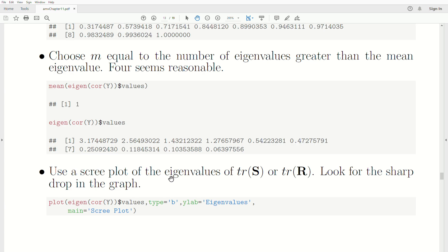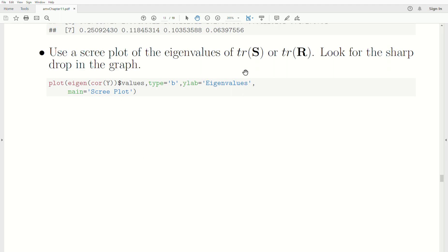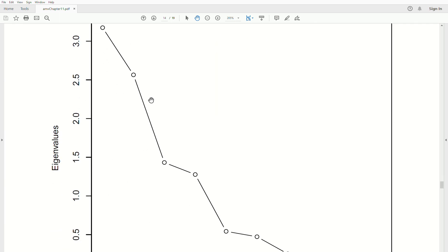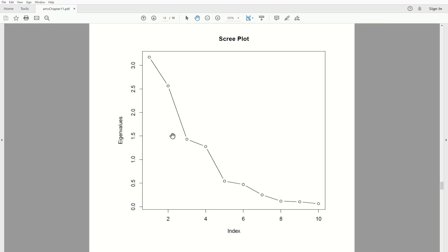If we look at a scree plot of the eigenvalues of S or R, the covariance matrix or correlation matrix, look at the sharp drop in the graph. We just plot the eigenvalues. Scree, I think, is a geological term that means the crud at the bottom of a cliff. So if this is a cliff and this is the crud that we don't want, it's one, two, three, four. Again, the scree plot indicates that we should have a four-factor model.